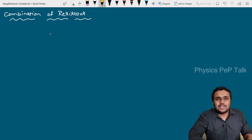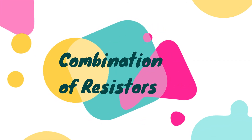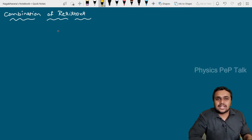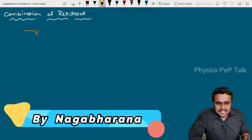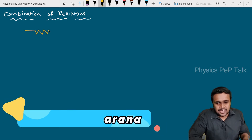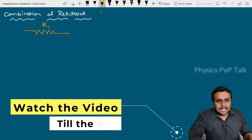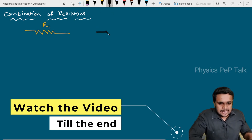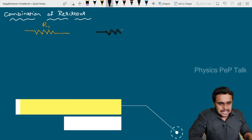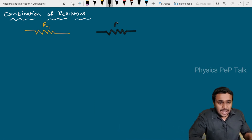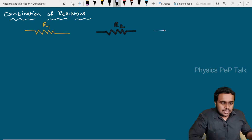Hello students, welcome to Physics Pep Talk. In this video, we are going to talk about the combination of resistors. What if I give you a resistor of resistance R1, a resistor of resistance R2, and another resistor having a resistance of R3?